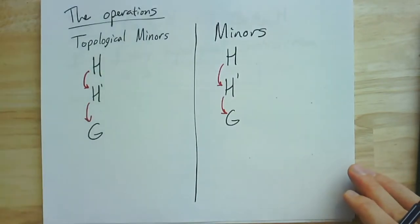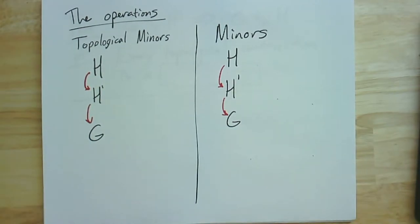So that's our list of four ways to hide one graph inside another. And the last two, these minor operations, have a natural interpretation in terms of operations on the graph.